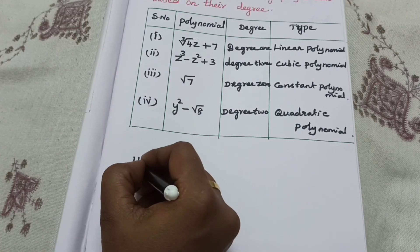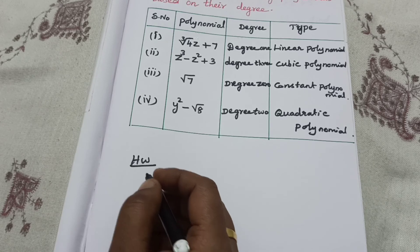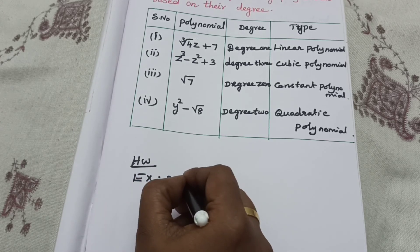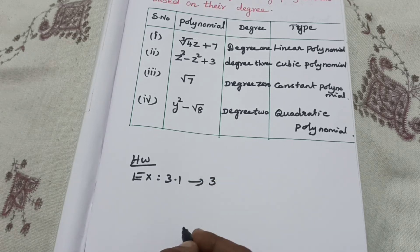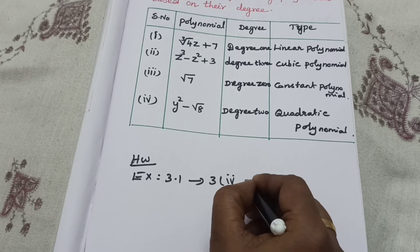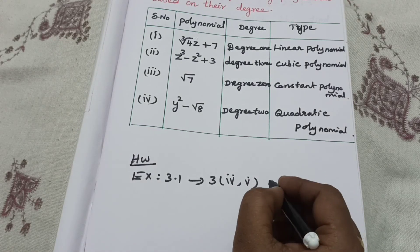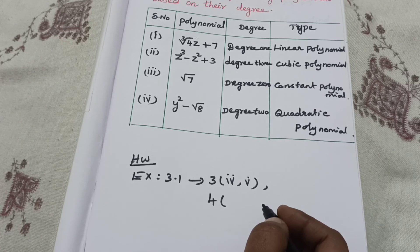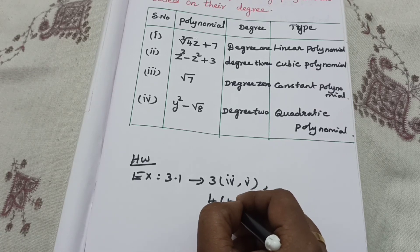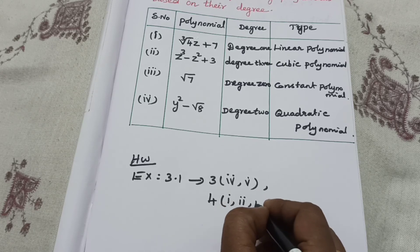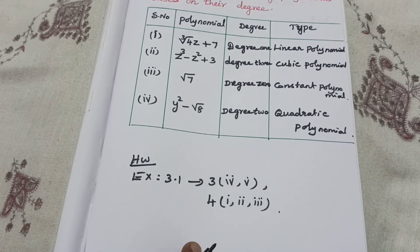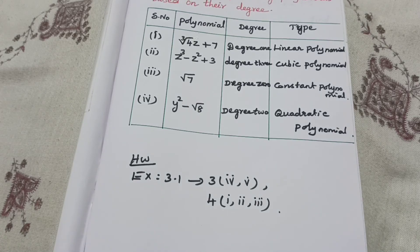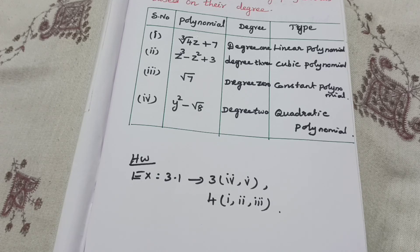Today's homework is Exercise 3.1, third question, subdivisions 4 and 5. Complete today's homework, and if you have any doubt, you can call me in the doubt clearing session.